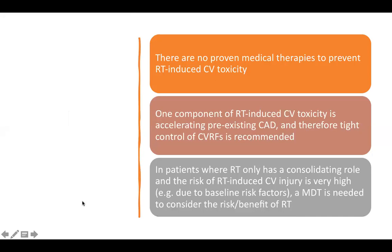The second topic of primary prevention covered in the guidelines is radiation therapy. There are no proven medical therapies to prevent radiation therapy-induced cardiovascular toxicity. Efforts focus on using technical approaches to localize radiation to the cancer site. Since radiation therapy can accelerate pre-existing coronary artery disease, tight control of cardiovascular risk factors is recommended. Where radiation therapy has only a controlling role and the risk of cardiovascular injury is very high, a multidisciplinary approach is needed.